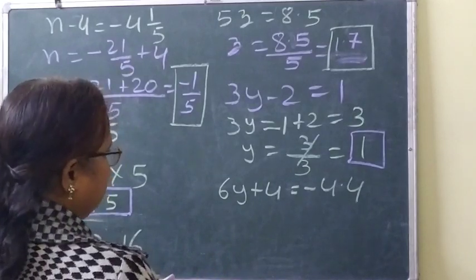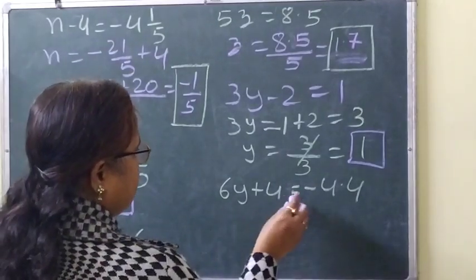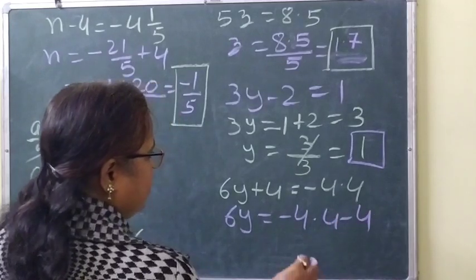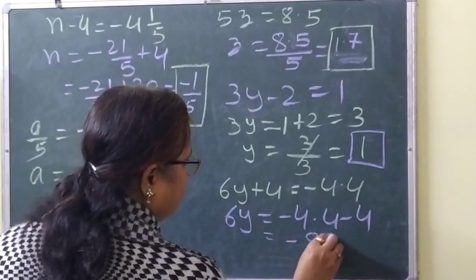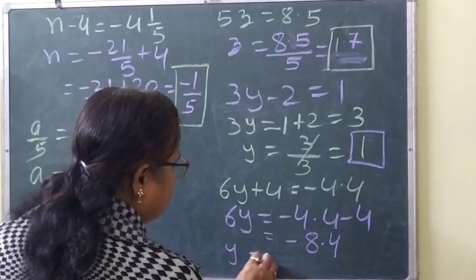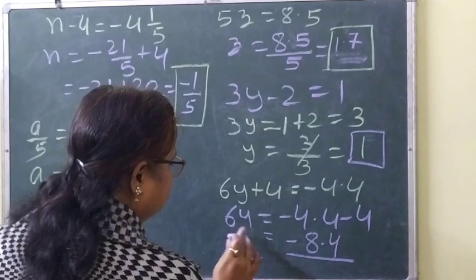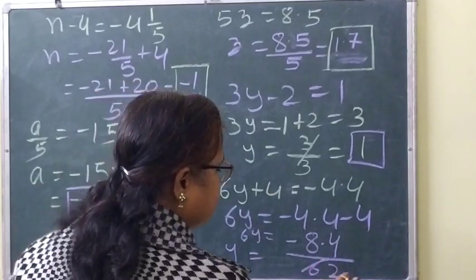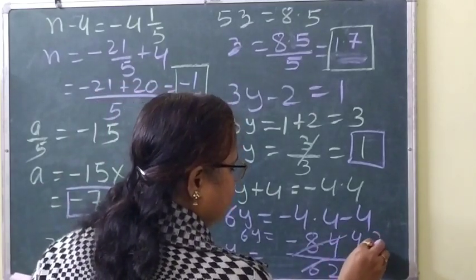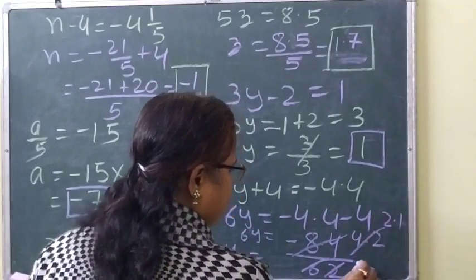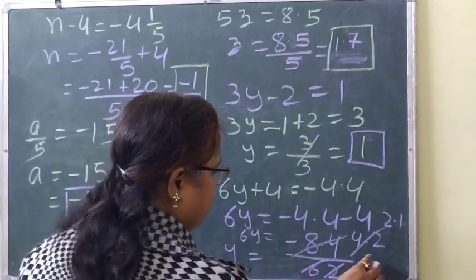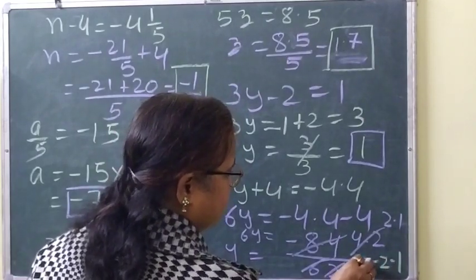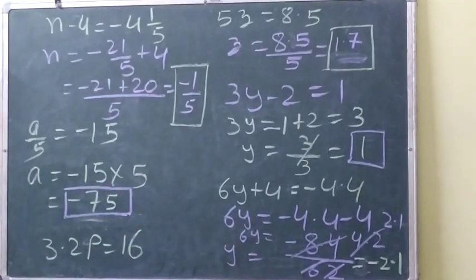For 6y plus 4 equals minus 4.4: 6y equals minus 4.4 minus 4, giving 6y equals minus 8.4. So y equals minus 8.4 divided by 6. Cancelling: 2 threes are 6, 2 fours are 8, point 2 twos are 4. So y equals minus 2.1.